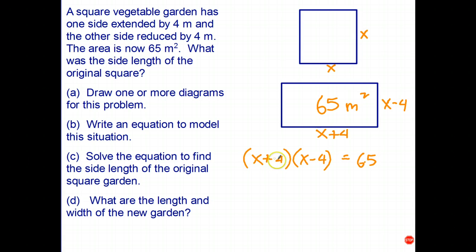It's of the form A plus B, A minus B, which from a previous video is A squared minus B squared. So the expanded left-hand side is X squared minus 16. We need to get a zero on the right-hand side, so we subtract sixty-five from each side.